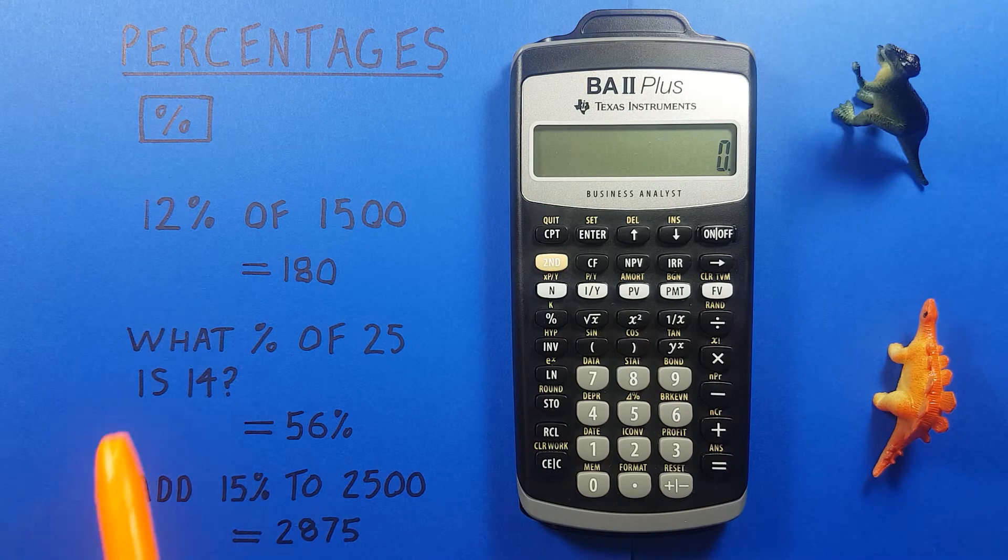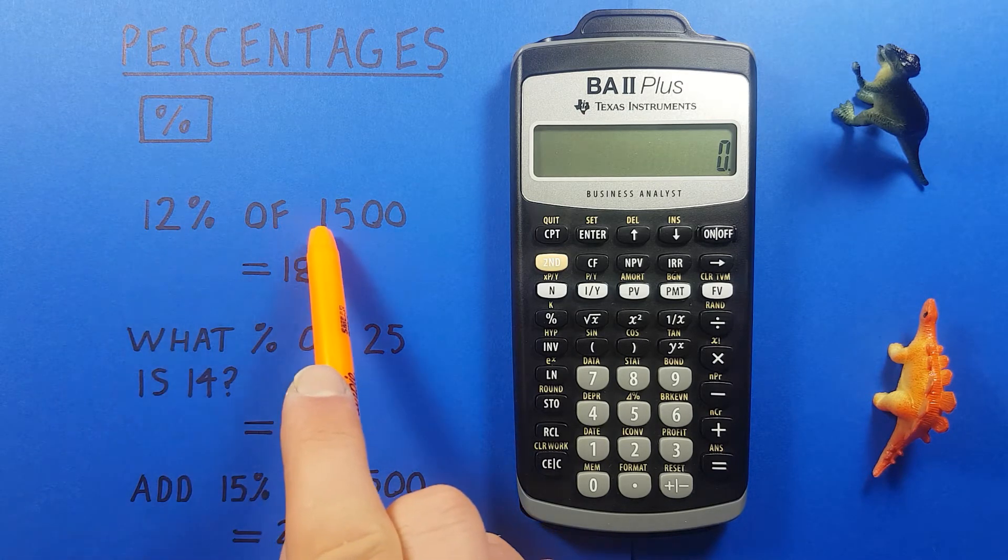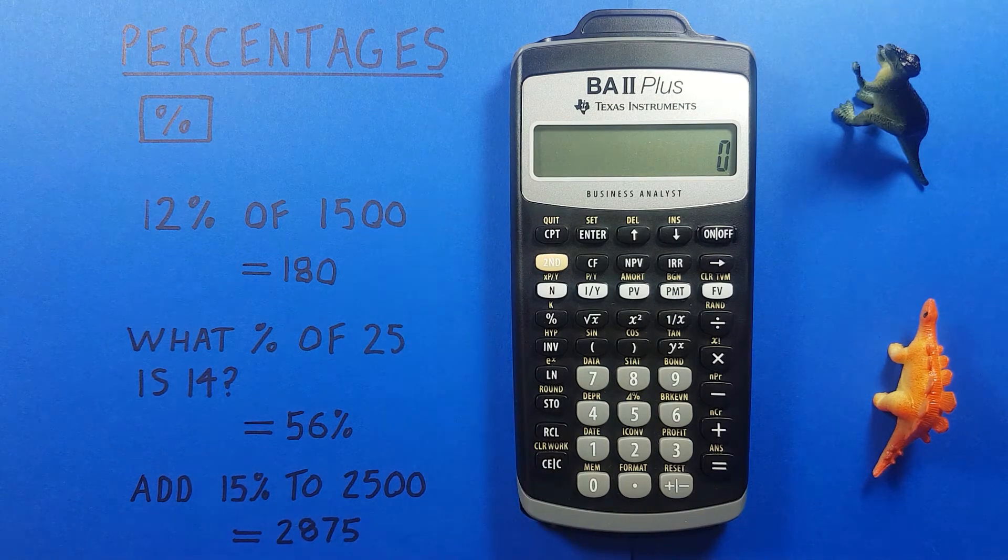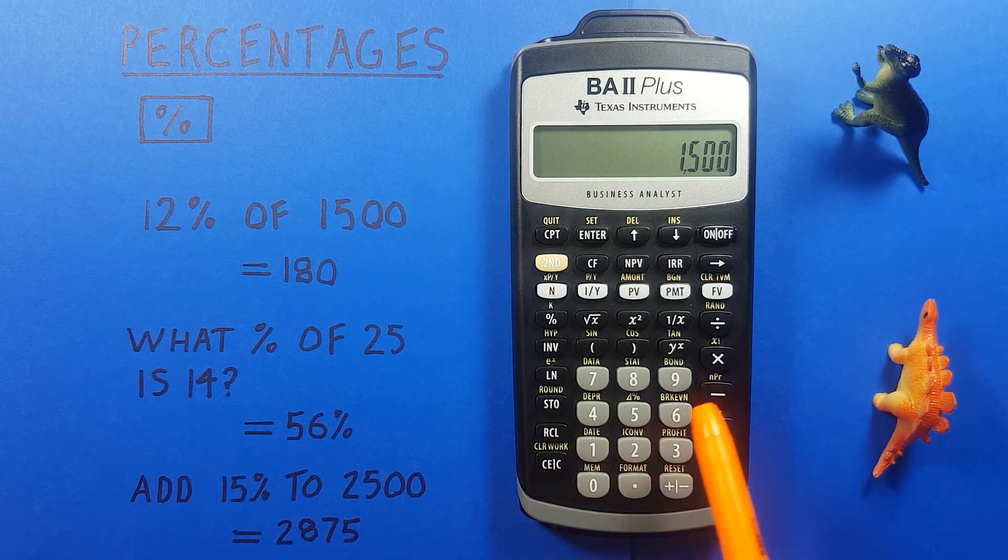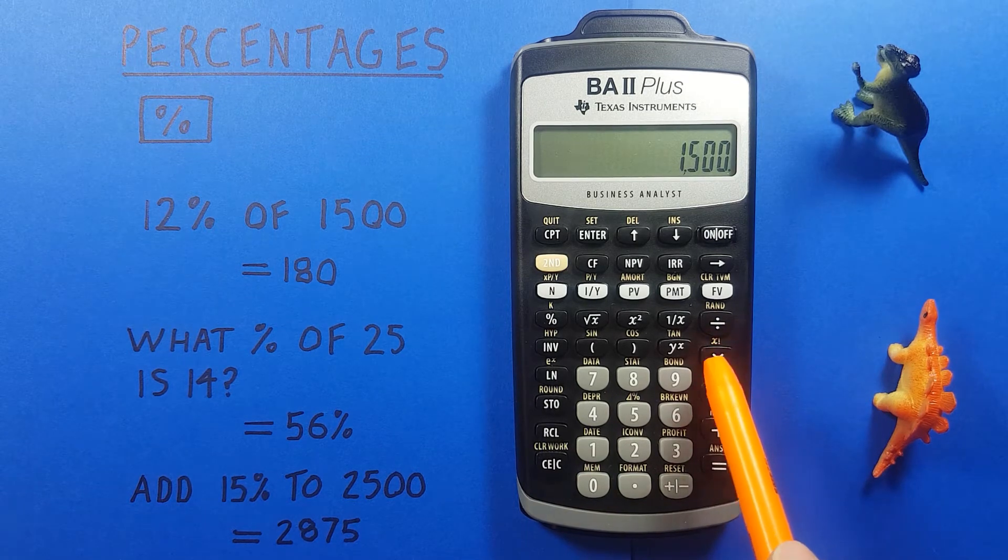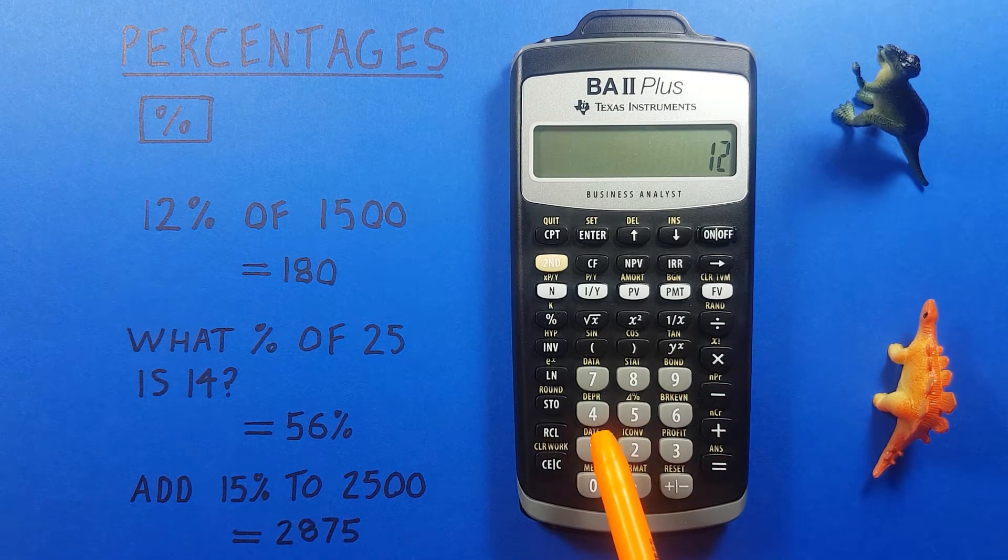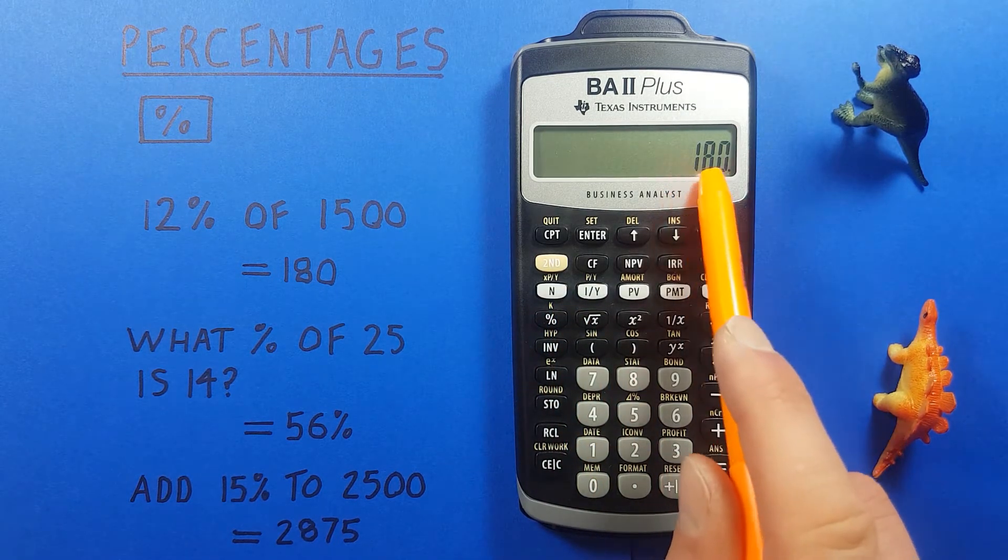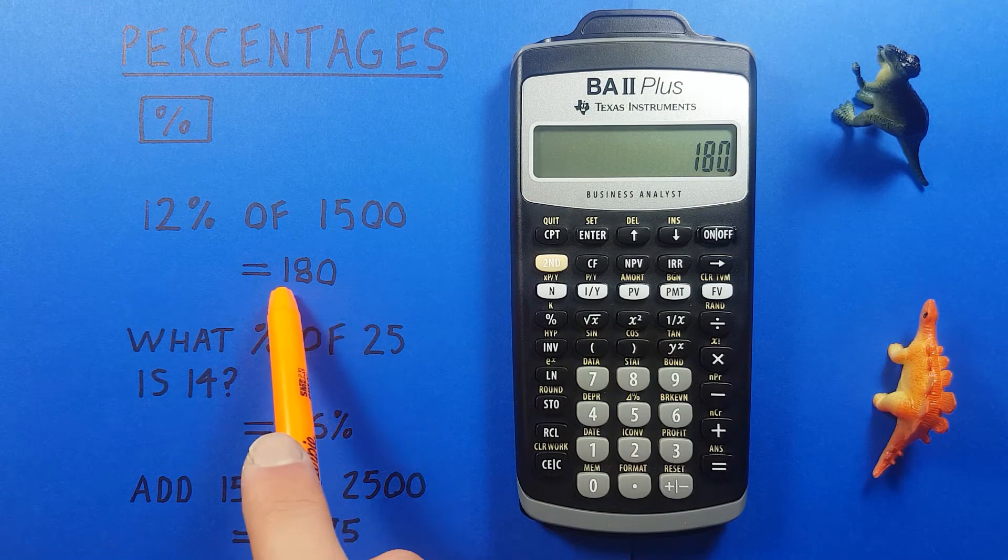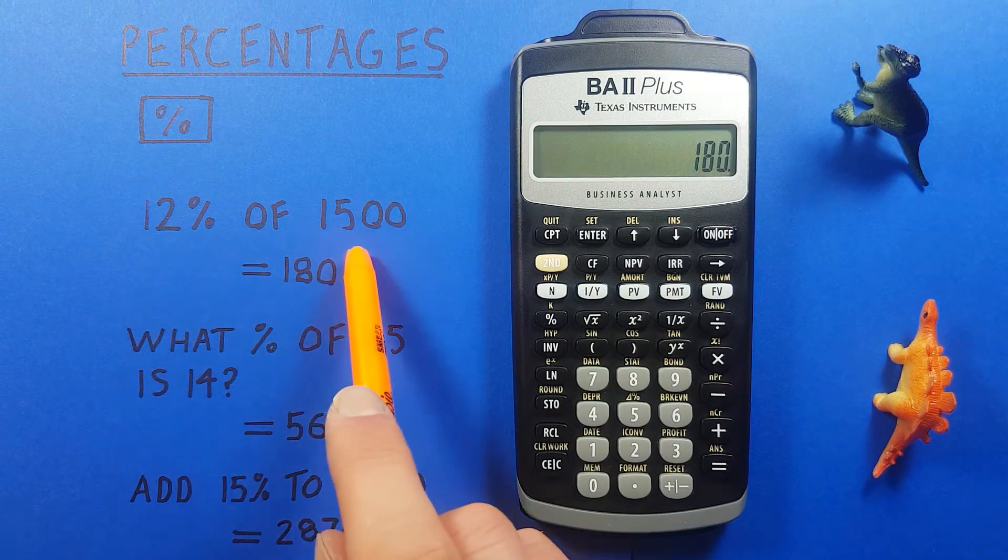For example if we wanted to find out what 12% of 1500 was we would just enter the 1500 and then times 12 and then hit the percentage key and equals and we see we get 180 so we know 180 is 12% of 1500.